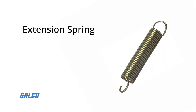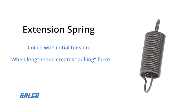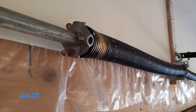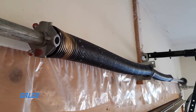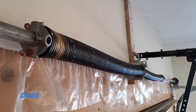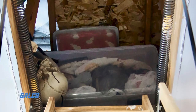Extension springs are another type found in industrial spaces. These springs are coiled with an initial tension, and when the spring is lengthened, it creates a pulling force as it tries to return to its original shape. These springs have loops or hooks on the ends so that they can easily attach to components that need to be held together by the spring's force.